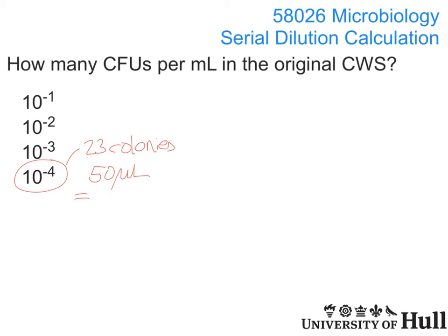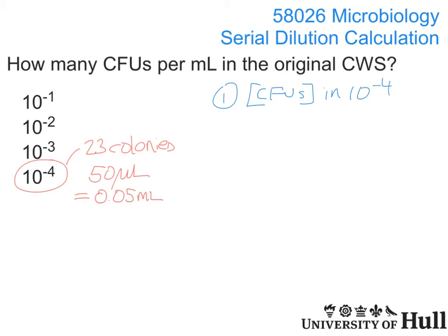It's worth remembering that 50 microlitres is the same thing as 0.05 millilitres, and that might be quite helpful in a couple of moments. So, how are we going to use this information about our dilution to work out what was going on in the original sample? There are two stages to this calculation. The first stage is we want to know the concentration of colony-forming units in that 10 to the minus 4 sample.